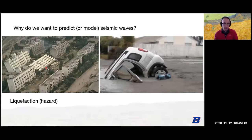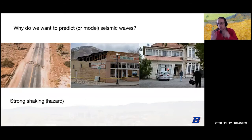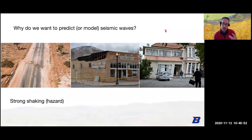When we talk about predicting the wave field, it happens at a whole variety of scales. Strong shaking can shake buildings loose — a building in Utah where brick broke loose, a road that completely separated, and a house in Christchurch, New Zealand that tilted and is now condemned. There's a whole variety of infrastructure destruction during strong shaking, and we would like to predict it so we can engineer buildings and roads to withstand it.